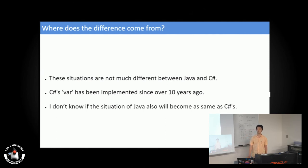This situation is not so much different between Java and C-Sharp. But one of the big differences is C-Sharp's var was implemented over 10 years ago, so maybe the programmers have been used to using it. I don't know if the situation of Java will become the same as C-Sharp.